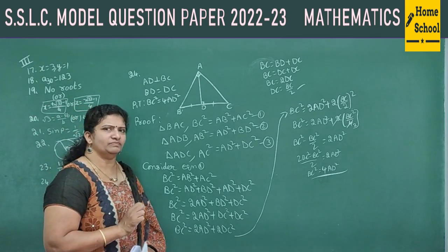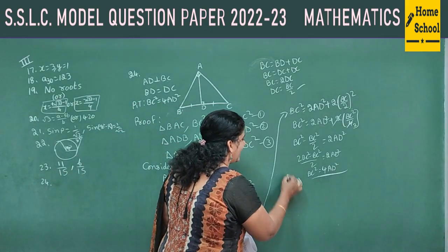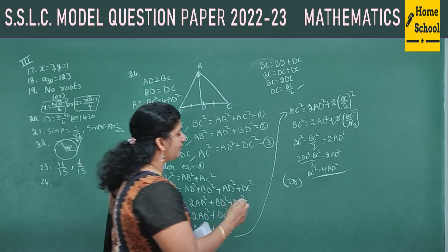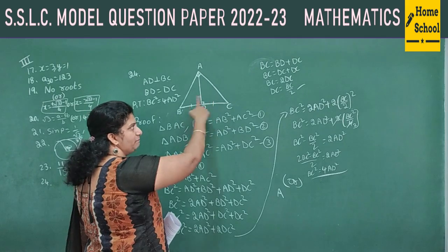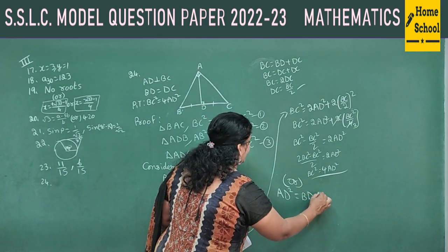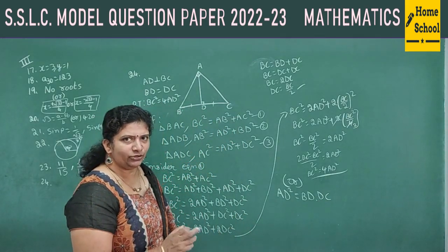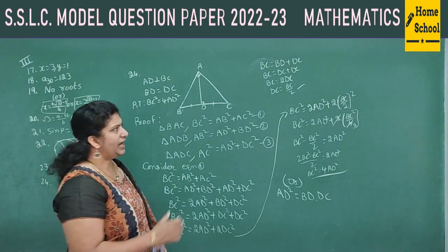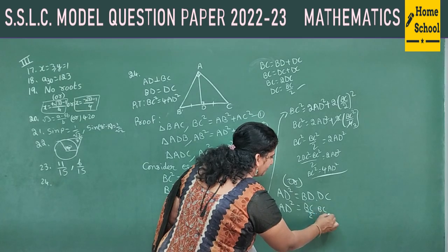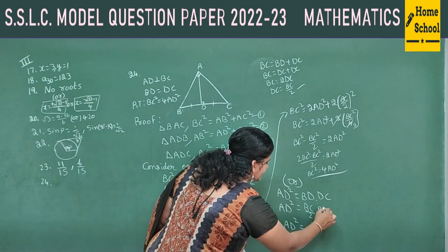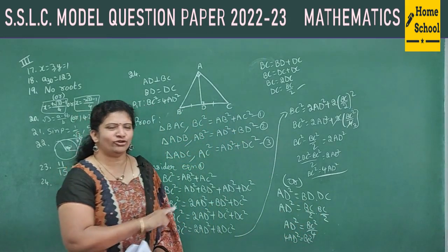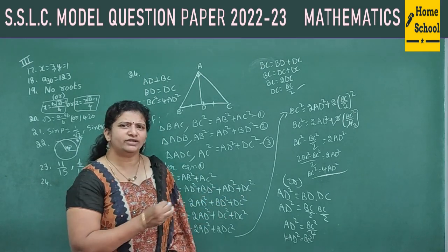Alternatively, a shorter method: since triangle ABC is a right triangle with altitude AD to the hypotenuse, by the geometric mean relation AD² = BD × DC. Since BD = DC = BC/2, substitute: AD² = (BC/2)(BC/2) = BC²/4. Therefore 4AD² = BC². The same result is proved in just two lines. With this we complete the third main.